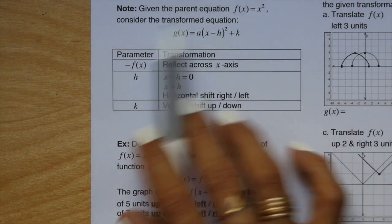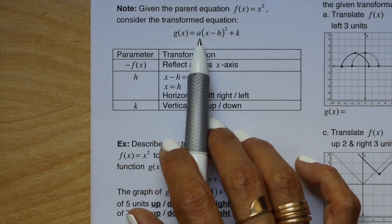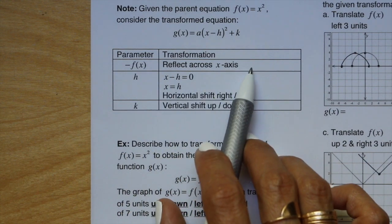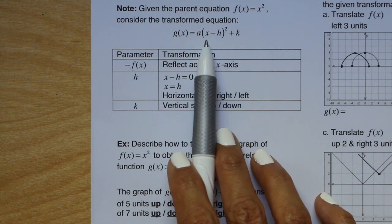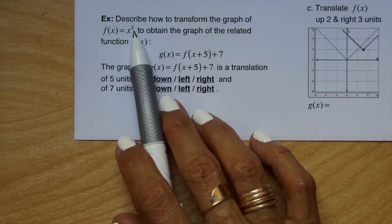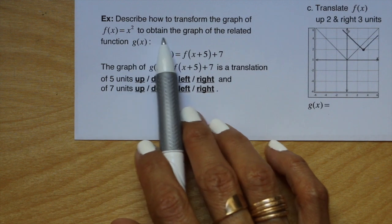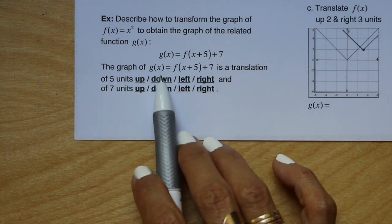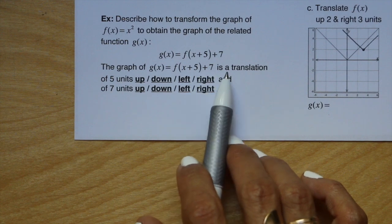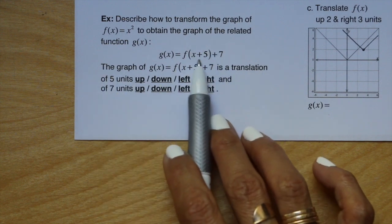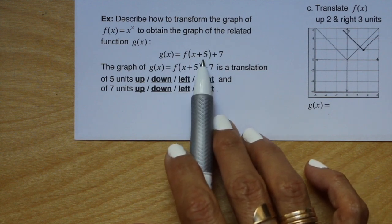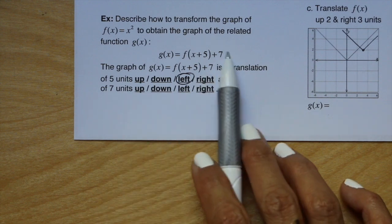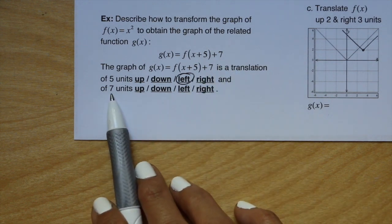Given the parent function f of x equals x squared, consider the transformed equation g of x equals a times (x minus h) squared plus k. A negative in front reflects across the x-axis; a number inside the parentheses with the x gives a horizontal movement; a number at the end shifts up and down. For example, g of x equals f of x plus 5 plus 7 is a translation of 5 units left (because x plus 5 is opposite) and 7 units up.